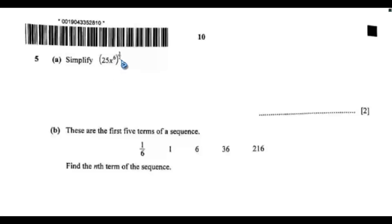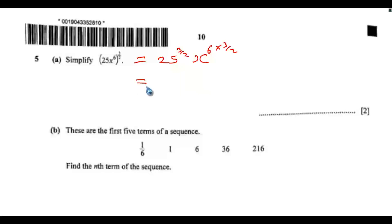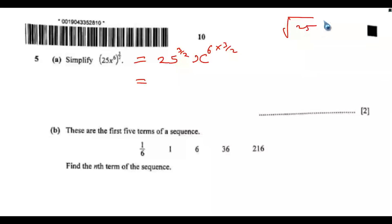Question 5a: simplify 25x to the power of 6, everything raised to the power of 3 over 2. This is the same as 25 to the power of 3 over 2, then x to the power of 6 multiplied by 3 over 2. This is a fractional index — that's the law of indices. So you can draw a root like this: 2 will be the root, then you have 25 raised to the power of 3.